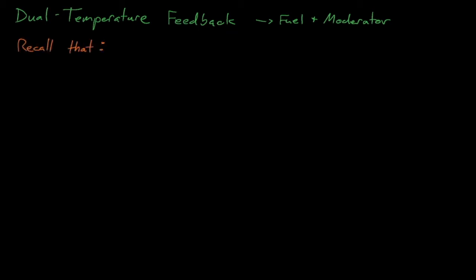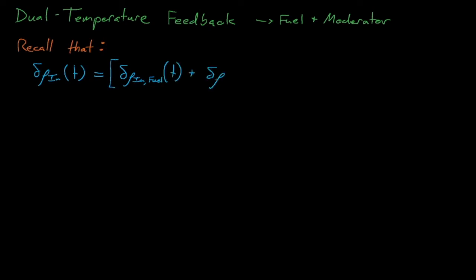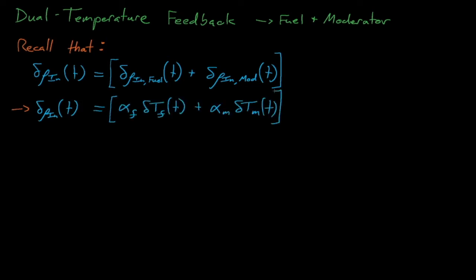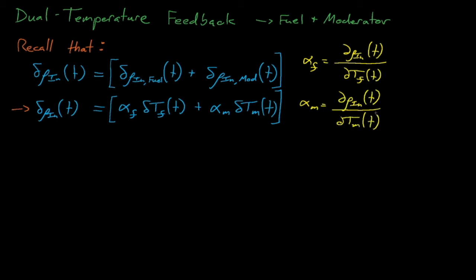Recall that the internal reactivity in a system — the reactivity induced from feedback — is equal to the sum of the reactivity from fuel feedback and the reactivity from moderator feedback. By recalling the definition of the reactivity feedback coefficient alpha, we can recast this expression such that the internal reactivity equals the fuel reactivity coefficient times the fuel temperature change, plus the moderator reactivity coefficient times the moderator temperature change.